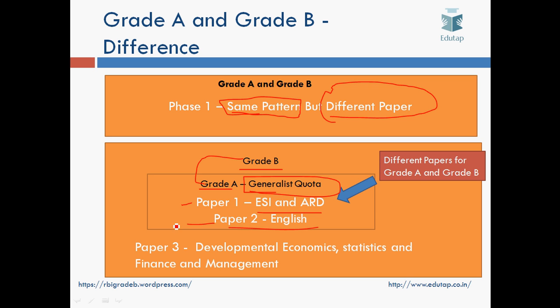Please remember that this video is for people who have applied for seats in the Journalist Quota. Grade A and Grade B both consist of Paper 1 and Paper 2, and the syllabus is entirely the same. But there would be different papers held for Grade A and Grade B. That is, if you are applying for both, you have to sit twice for Paper 1 of ESI and ARD and twice for Paper 2 of English. In addition, Grade B would have a Paper 3 consisting of Development, Economics, Statistics, Finance and Management. This is only valid for Grade B and is not part of Grade A.